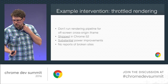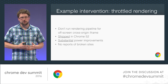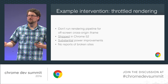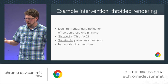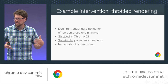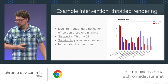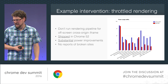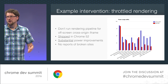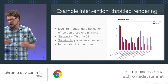A concrete example: in Chrome 52, we shipped an intervention where we throttled the rendering pipeline for off-screen cross-origin iframes. A lot of sites were using a lot of CPU for updating animations of ads that weren't even visible. Request Animation Frame is supposed to fire whether or not your iframe is visible — so we investigated, looked at what other browsers had done, and shipped an intervention in 52 that showed substantial power improvements. On a bunch of sites, if you just leave the page sitting there, power usage went down by 50% and in some cases 90%. And to this day, we haven't had a single report of any site being broken by this.